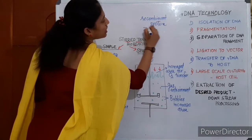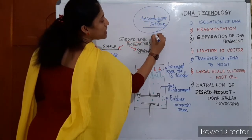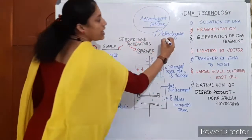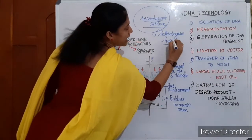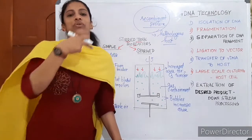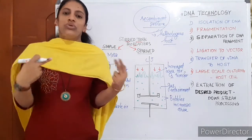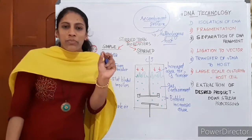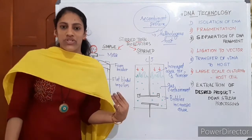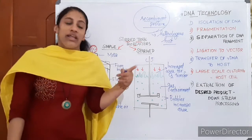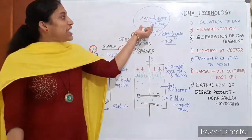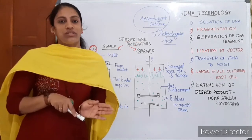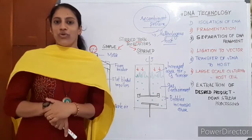What do you mean by a recombinant protein? A protein which is expressed in a heterologous host — if an organism is producing a protein not its own. A protein which is produced in a heterologous host because of the expression of a foreign gene. When a bacterium produces insulin due to the presence of the insulin gene in the form of R-DNA, that protein is called a recombinant protein. A recombinant protein is defined as a protein expressed in a heterologous host due to the insertion of a foreign gene.